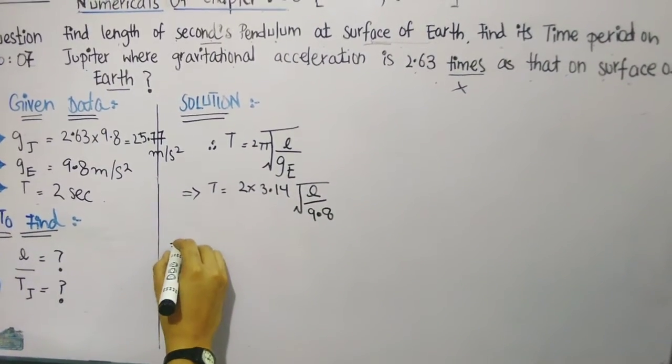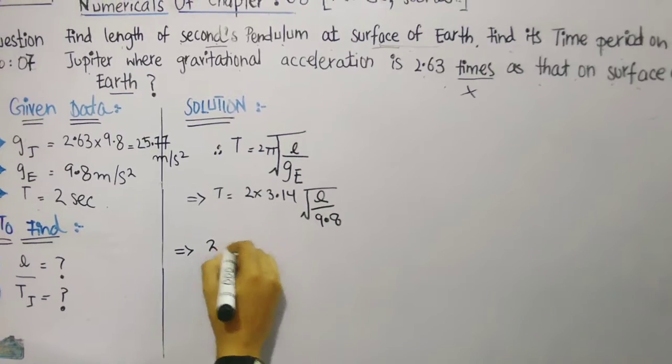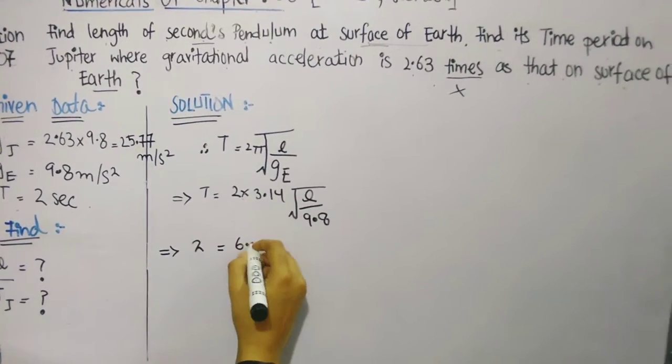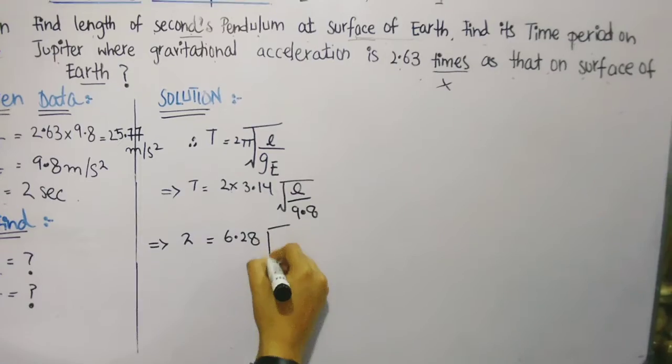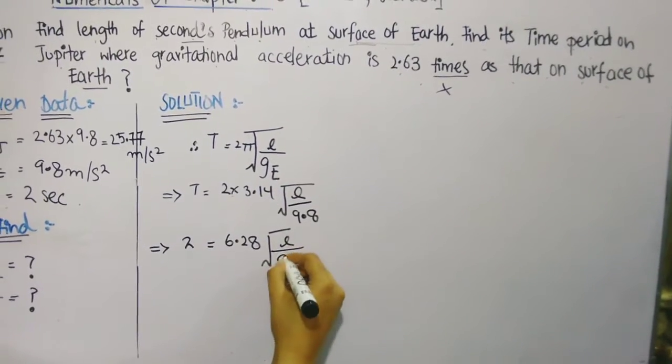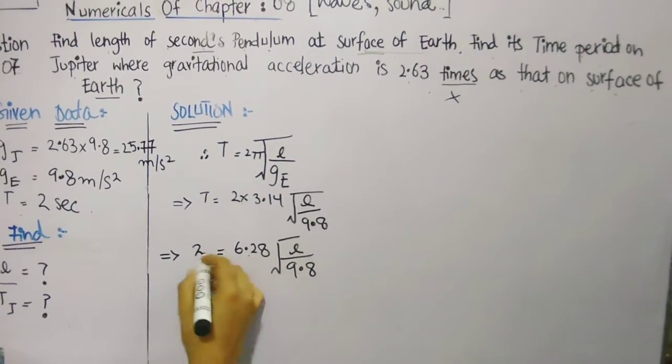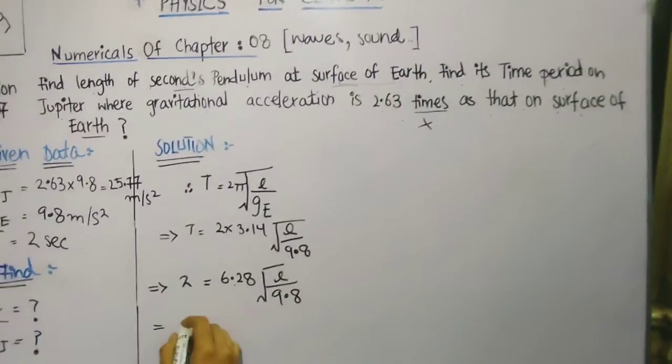Now the physics work was only to understand what the given data and the required is, and now this is all mathematics. So 3.14 multiplied by 2 is 6.28, and then we just multiply or divide it.